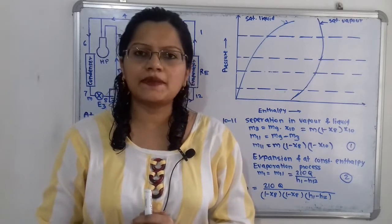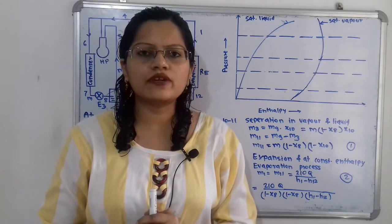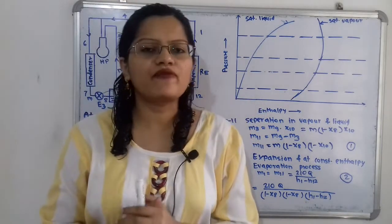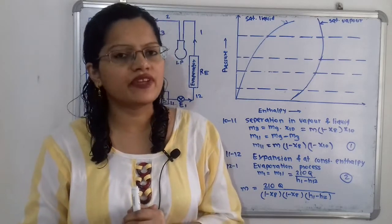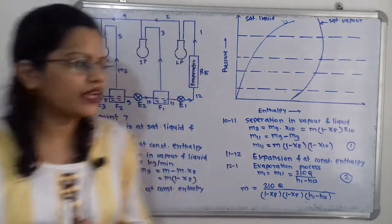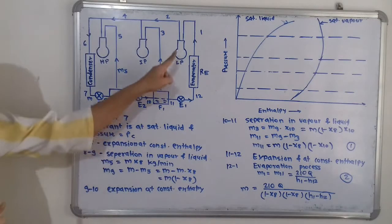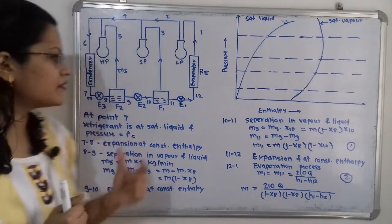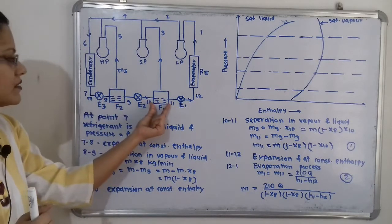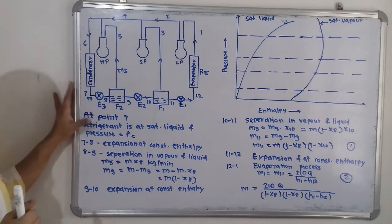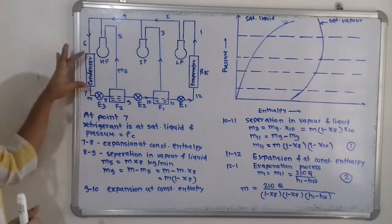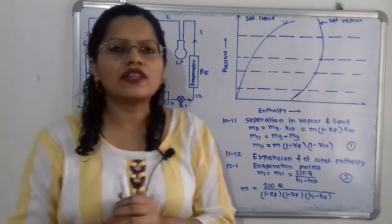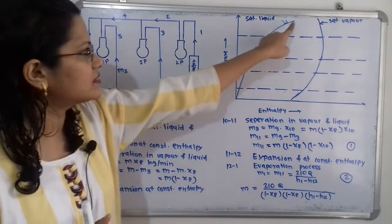Hello friends, this is Priyanka. Today we are going to study how to draw a pressure-enthalpy diagram for a three-stage compression system with flash chambers. The system has low pressure, intermediate pressure, and high pressure compressors with flash chambers F1 and F2. There is also an evaporator and a condenser.